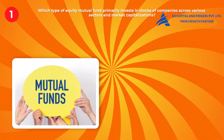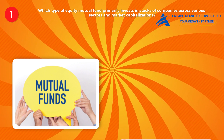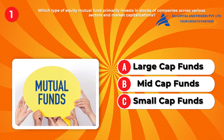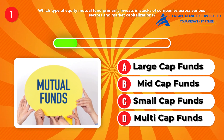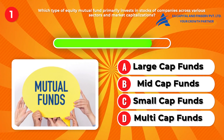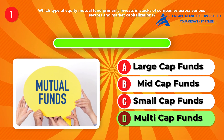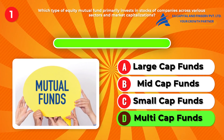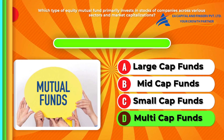Question one: Which type of equity mutual fund primarily invests in stocks of companies across various sectors and market capitalizations? A, large cap funds. B, mid cap funds. C, small cap funds. D, multi cap funds. Answer: D, multi cap funds. These funds offer diversification across different market segments, providing exposure to a wide range of stocks.